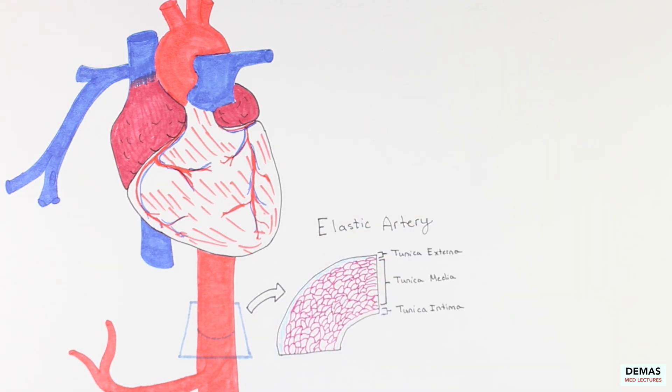The elastic fibers present in the elastic arteries are arranged in sheets that alternate with smooth muscle in the tunica media to provide the structural integrity of these arteries. I will draw the elastic fibers here in blue.